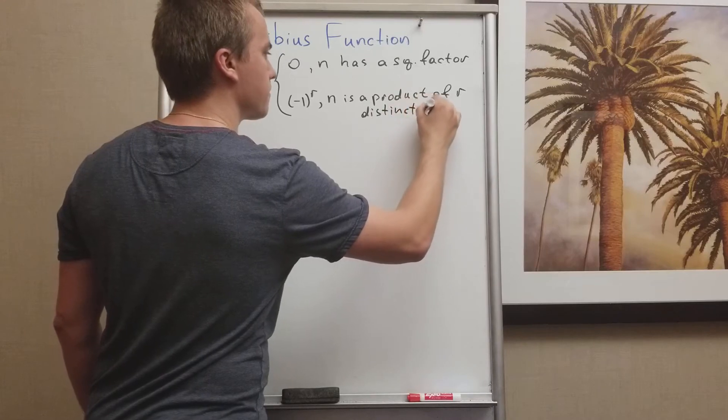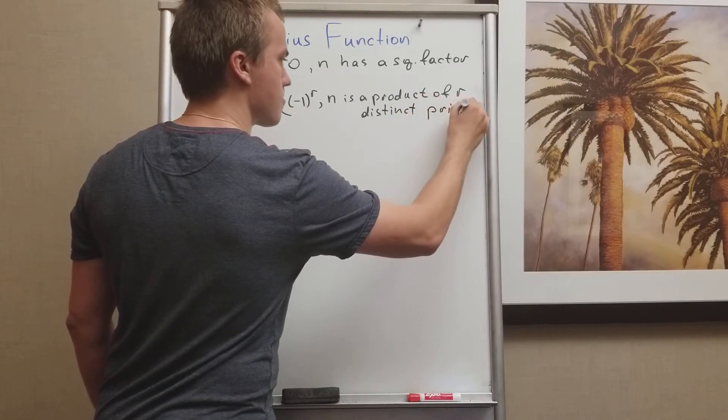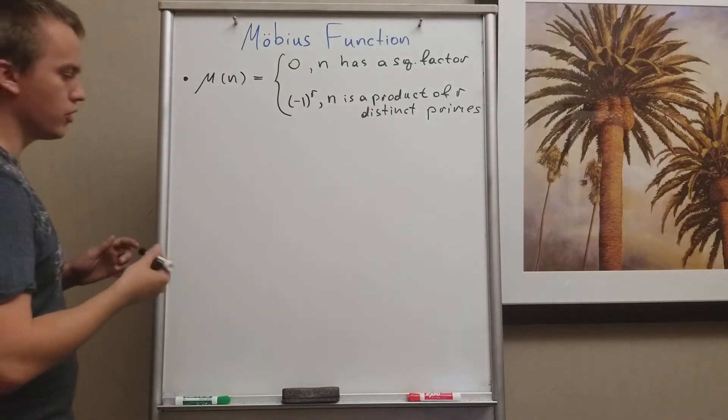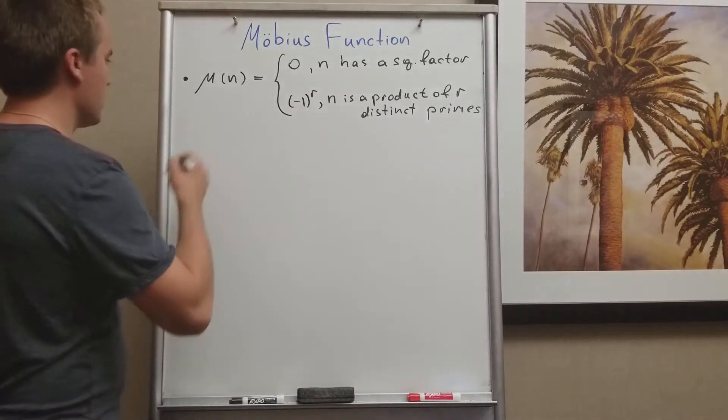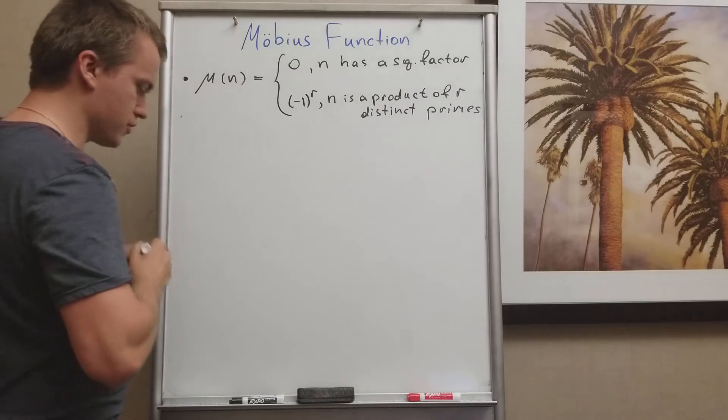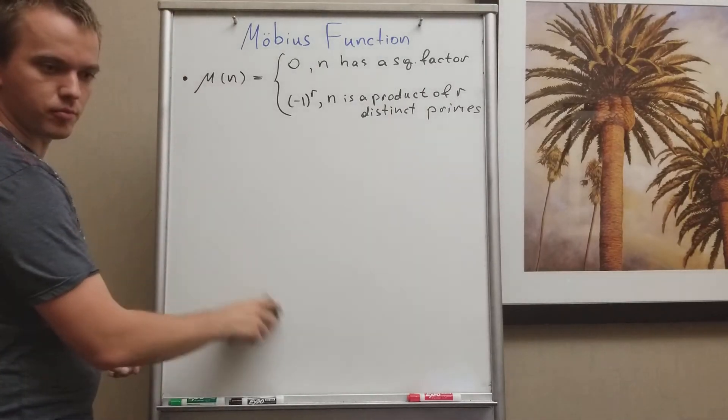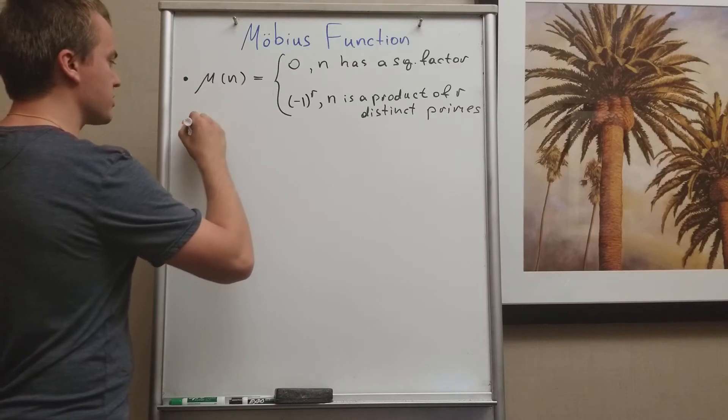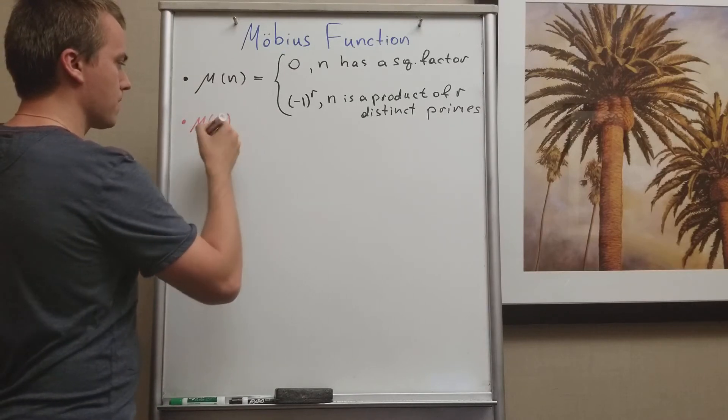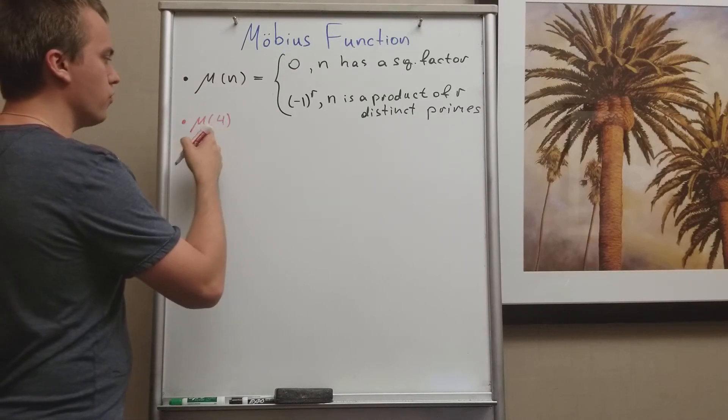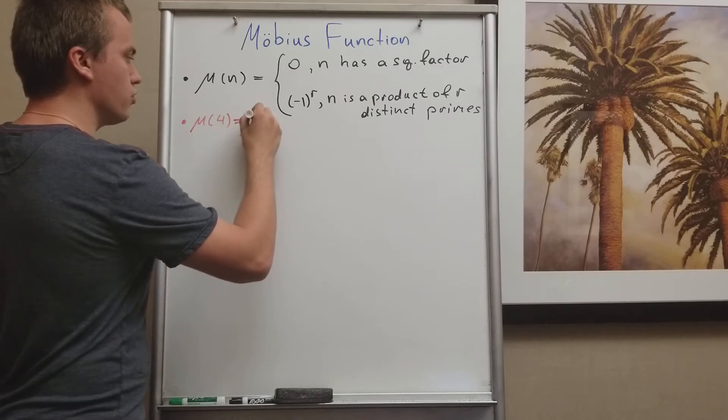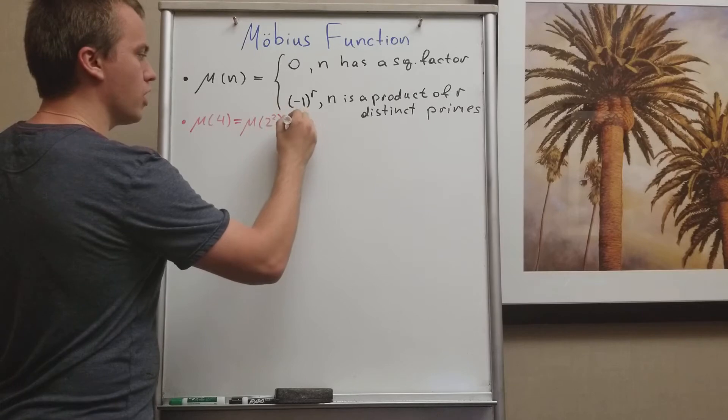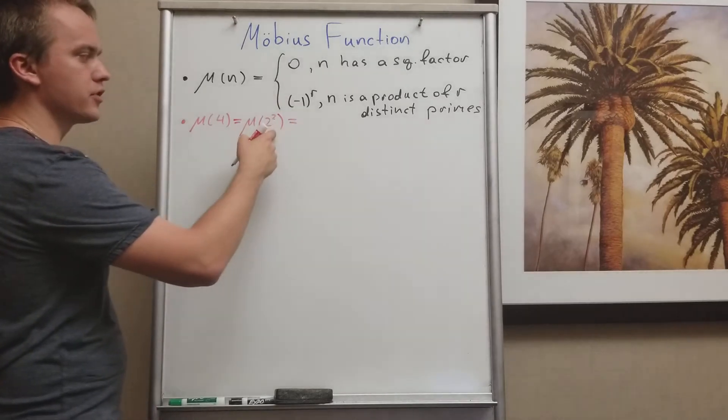So let's just do a couple of examples. Let's find the Möbius function. Where's my marker? Okay, let's use the red one. The Möbius function of 4: μ(4) is the same as μ(2²), and according to our definition, if you have a square factor it means our Möbius function equals zero.